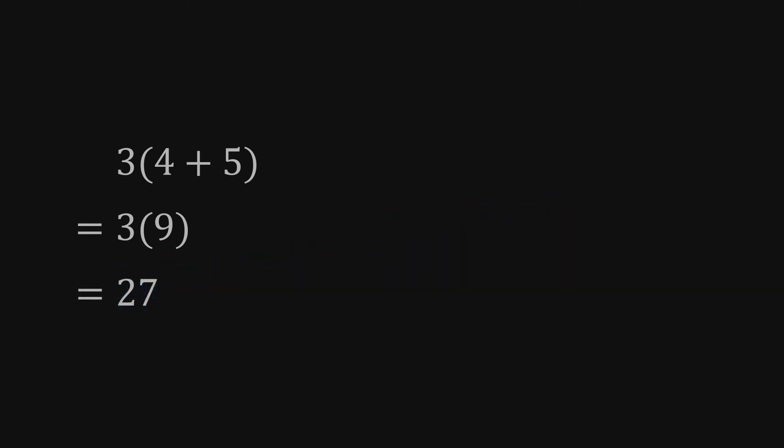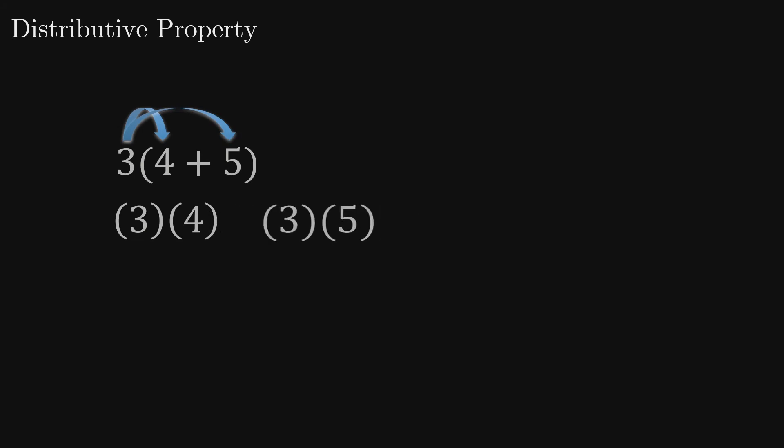We can arrive at this conclusion another way, though. Specifically, we can multiply 3 by each term of the sum separately, and then add the results. In other words, the 3 groups of 9 that we saw earlier is the same as 3 groups of 4 plus 3 groups of 5.